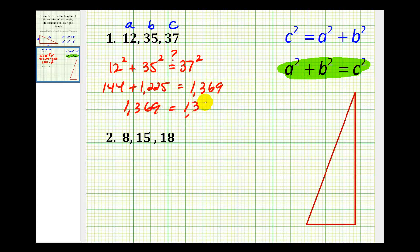And 144 plus 1,225 does equal 1,369. So this equation is true, and therefore, this would be a right triangle.